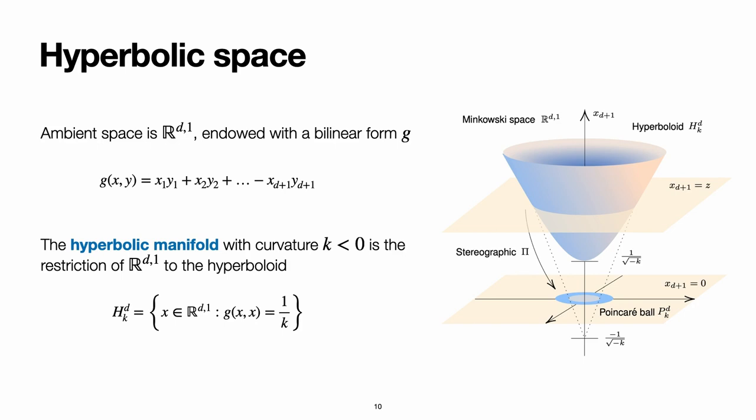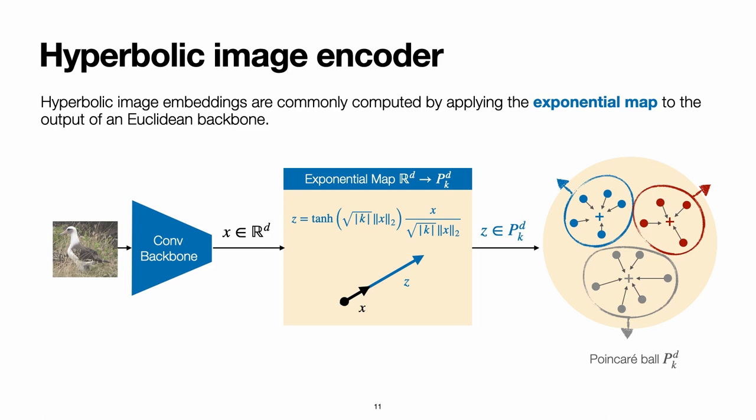The Poincaré ball model is then obtained by a stereographic projection of this hyperboloid. And it's precisely this Poincaré ball model that we'll be using throughout the presentation. So, now, if we have an image encoder, the way that we can obtain hyperbolic embeddings, one of the most commonly used ways, is through an exponential map.